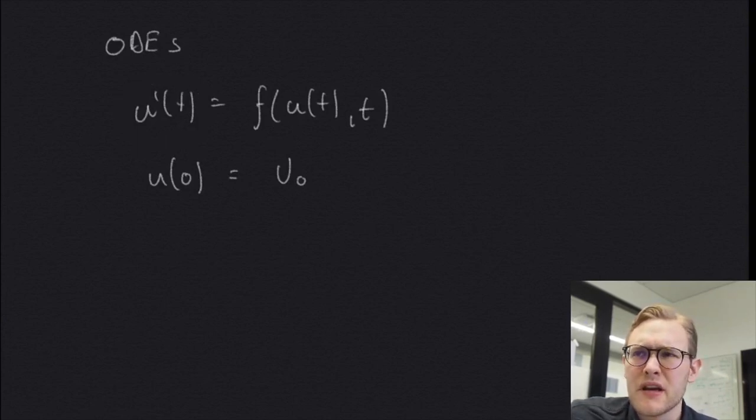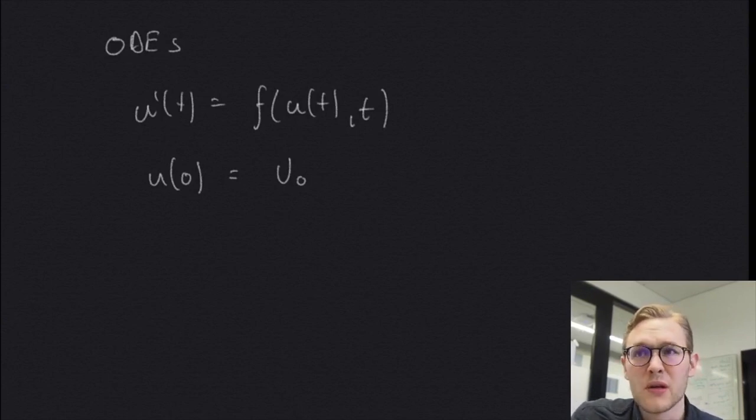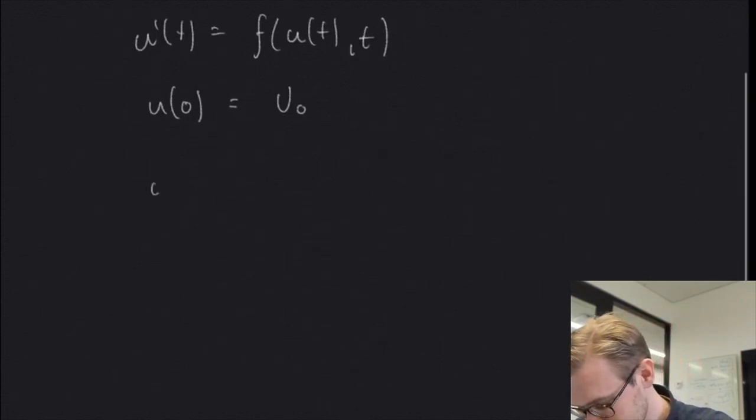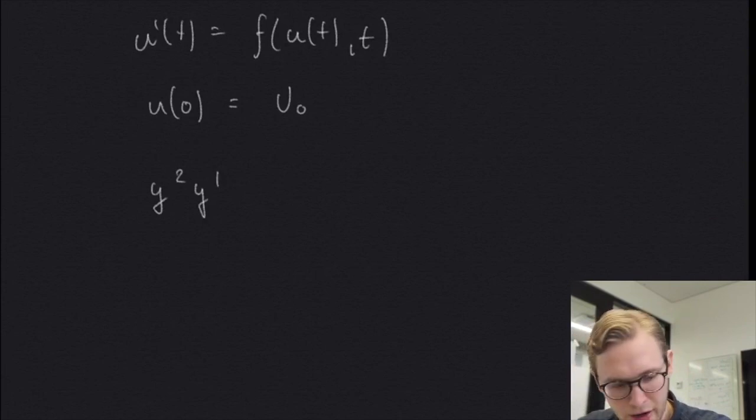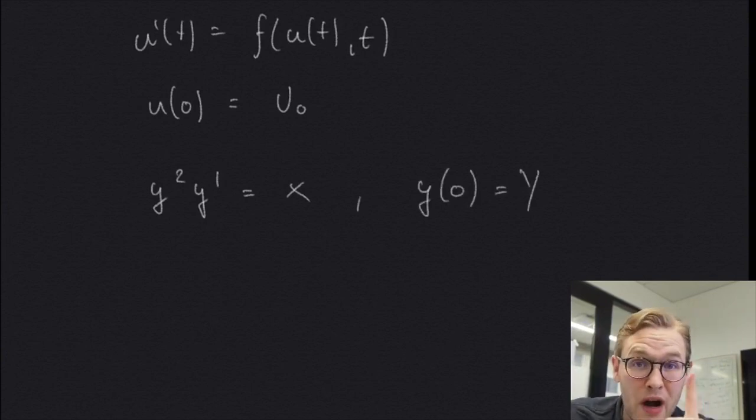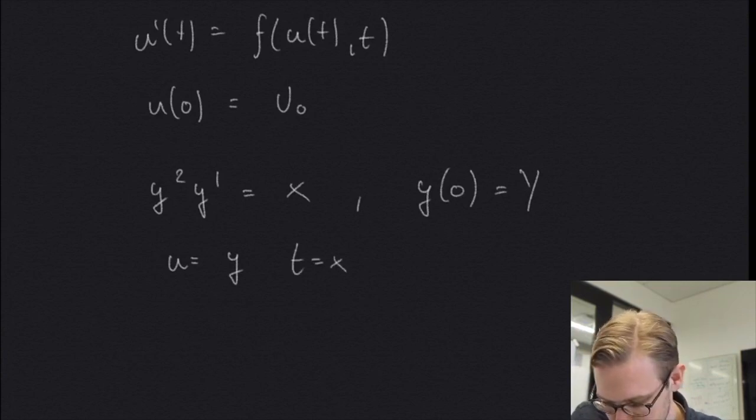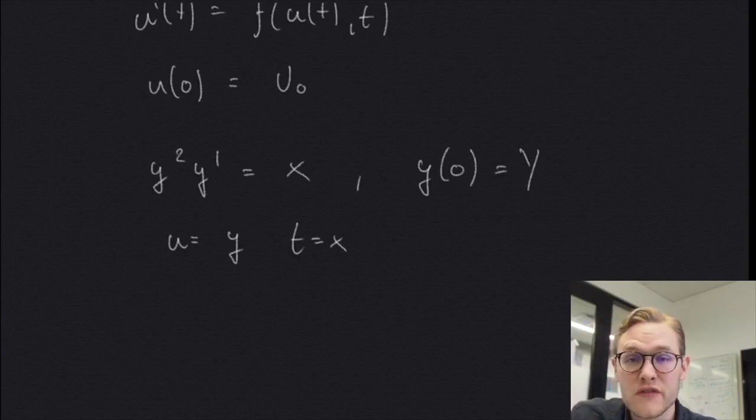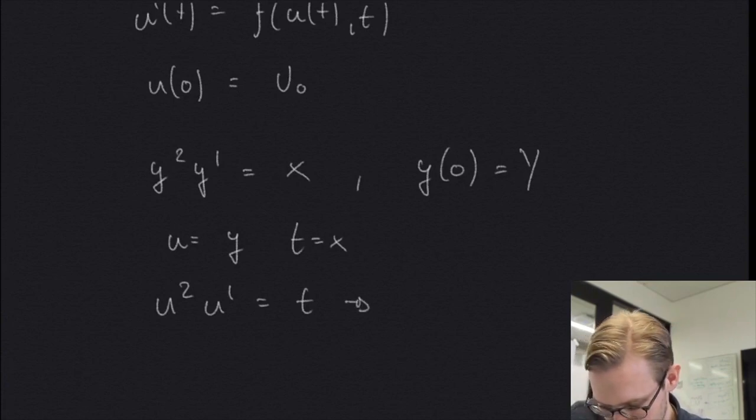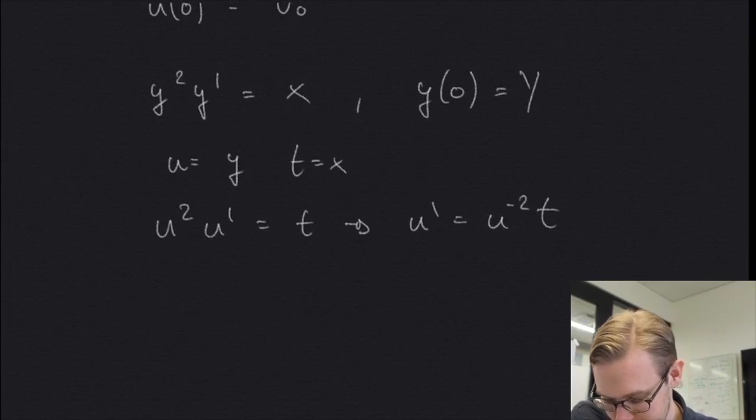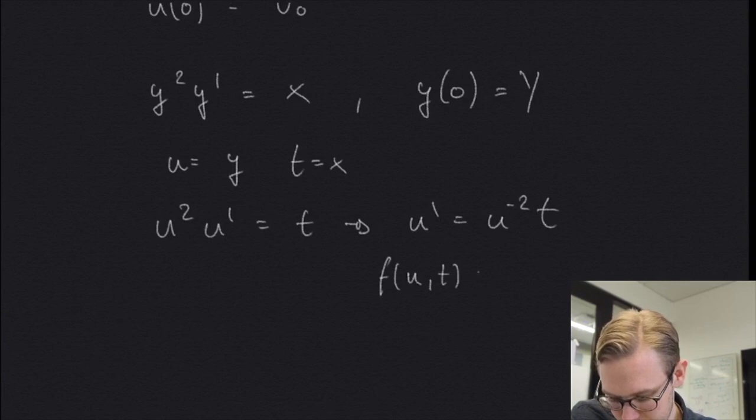So let's work through some examples of equations that can be written on this form. So say we have some equation that is written y squared, the derivative of y in x, equals x. And we have an initial condition, y equals some value. Now if we set u equal to y, and t equal to x, and rearrange this equation a bit, we insert it, we get u squared derivative of u times t, and then we can divide through by u squared, and we get something like this. And as you can see, now the right hand side is indeed a function dependent on both u and t equal to u to the power of minus two t.